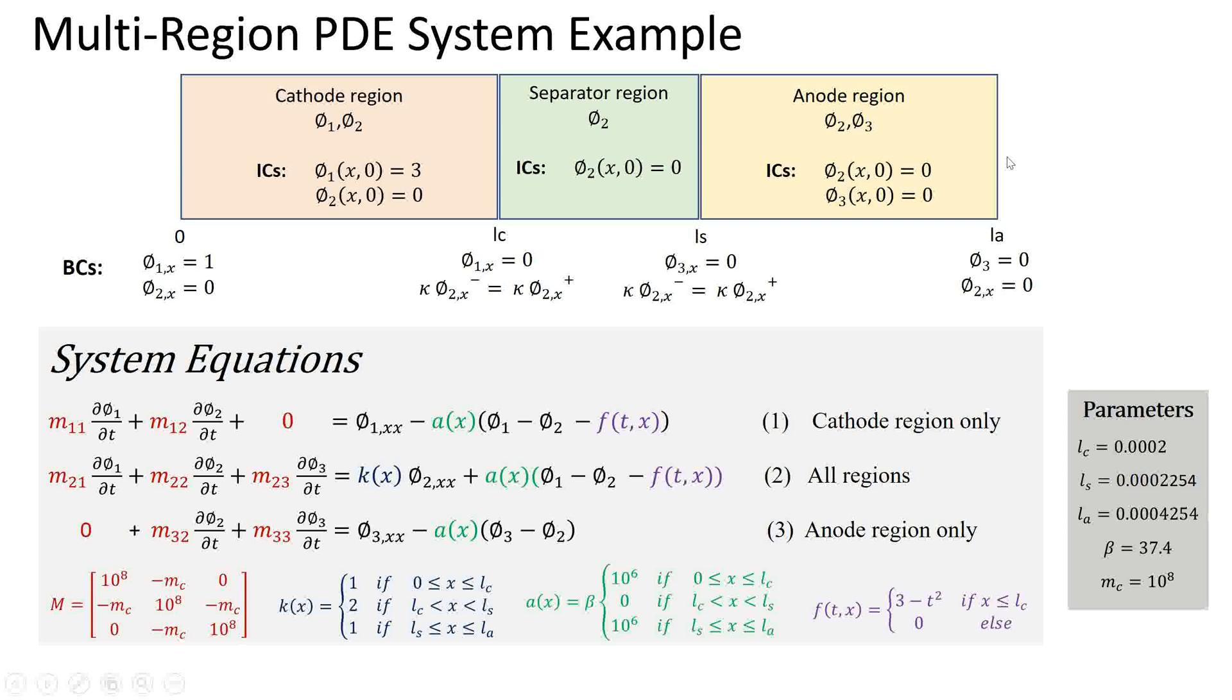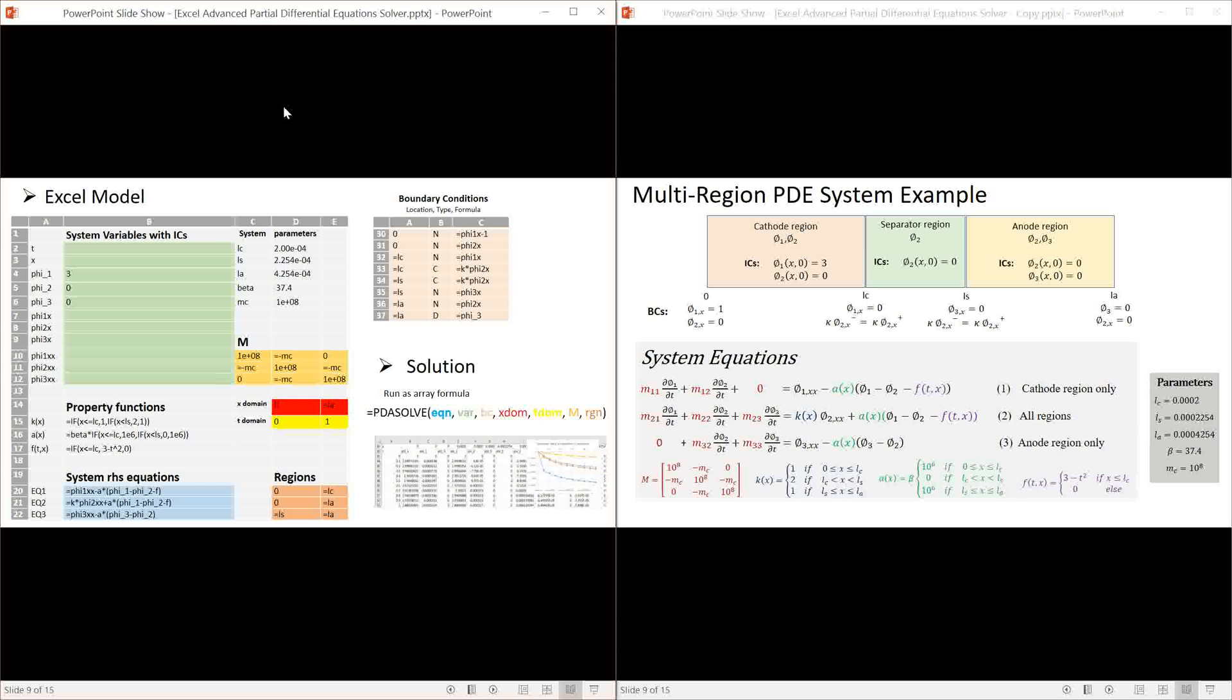Despite the system looking complicated, it's actually straightforward to model and solve in Excel. The slide shows the complete model and solution of the PDE system we just described. I started by naming the system variables in the green range: t, x, phi1, phi2, phi3 followed by their first and second derivatives.